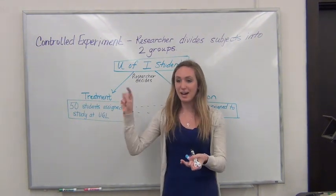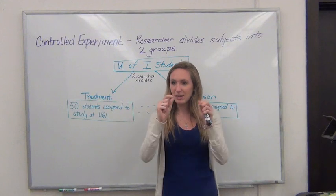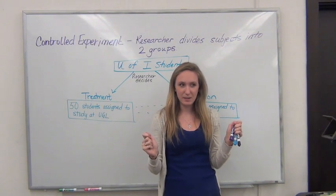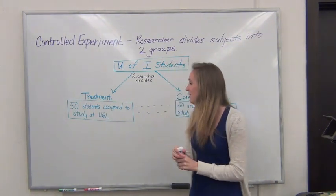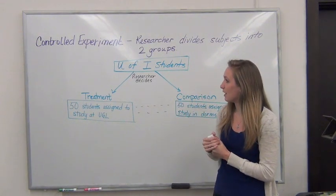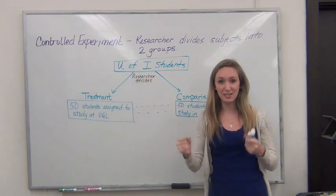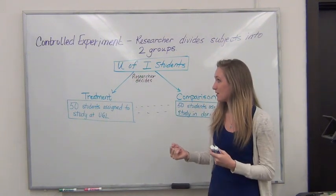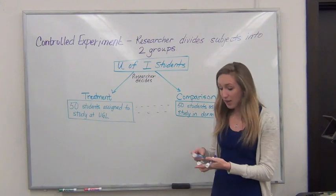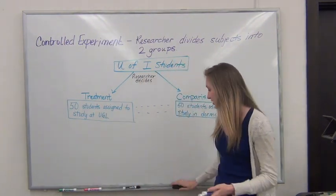The only thing that's different is the environment. Does that answer your question? Yeah. Yeah. Okay. So there's the main goal of the controlled experiment. And the main thing that should be stuck in your head is that the researcher divides the subjects into the treatment group and the comparison group. Now the other main one that we're going to see in the media a lot is the observational study.